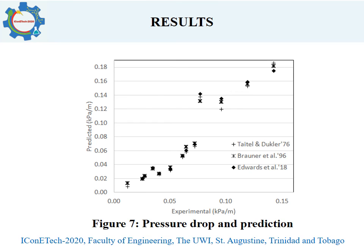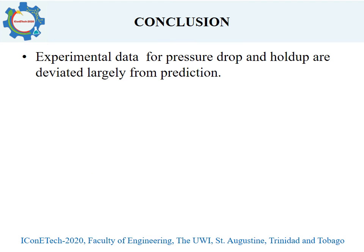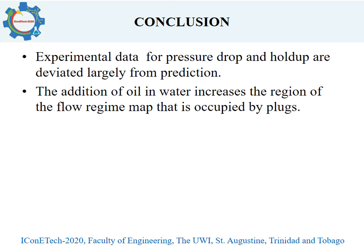In some cases, prediction exceeded plus or minus 31%, and this may be due to the sudden change in viscosity of the liquid phase as well as deviation from ideality. The reason may also be due to flow pattern variation with oil percentage. In the present study, the liquid is a dispersion of oil and water as well as an inverted water dispersion. Pressure drop and liquid hold-up are also compared with previous theory and predictions. The experimental data were found to deviate from predictions, even exceeding plus or minus 31%. Addition of oil increases the region of the flow regime map occupied by plug flow.